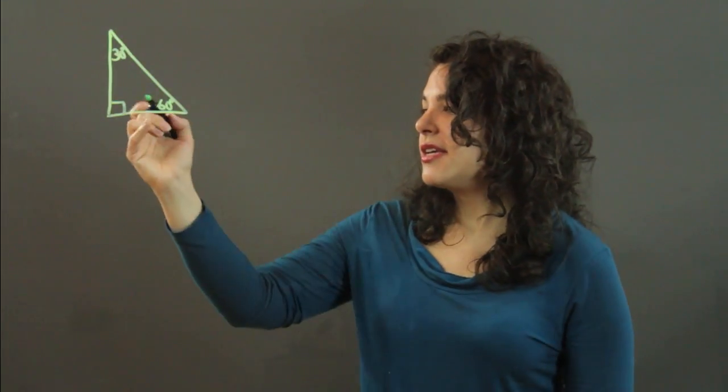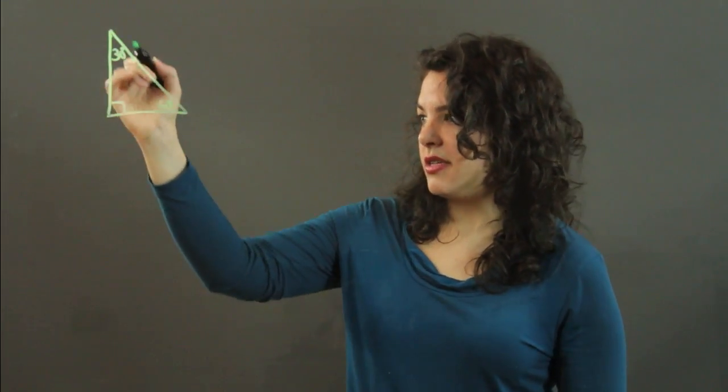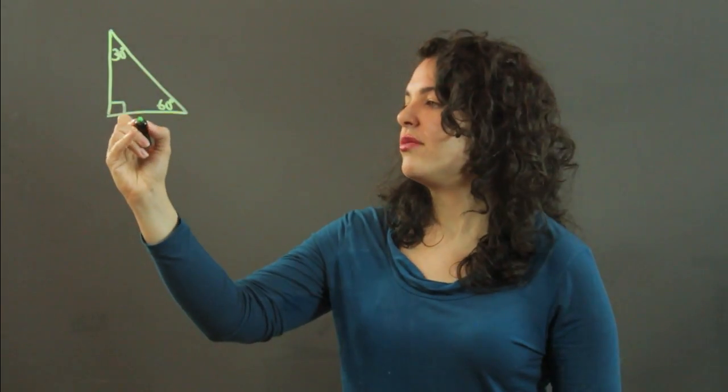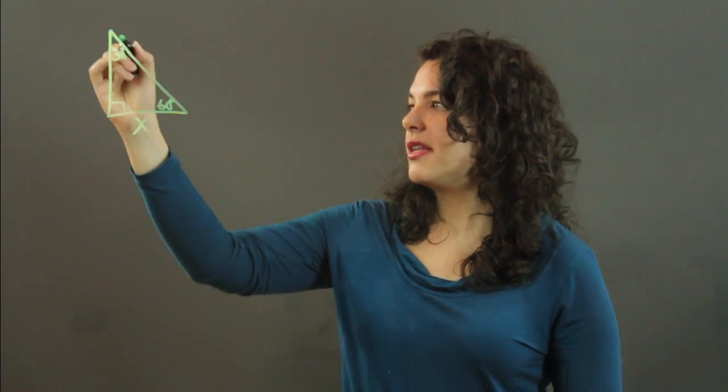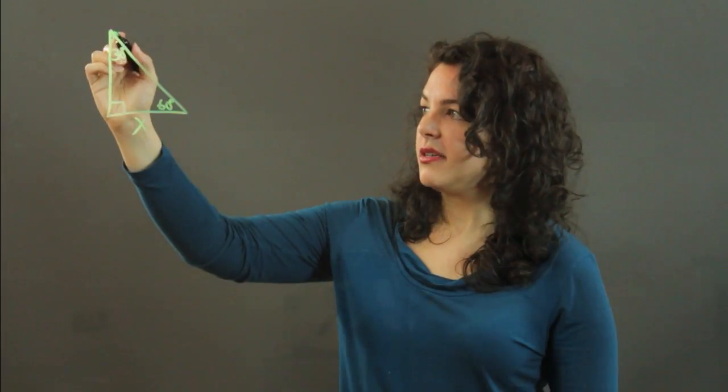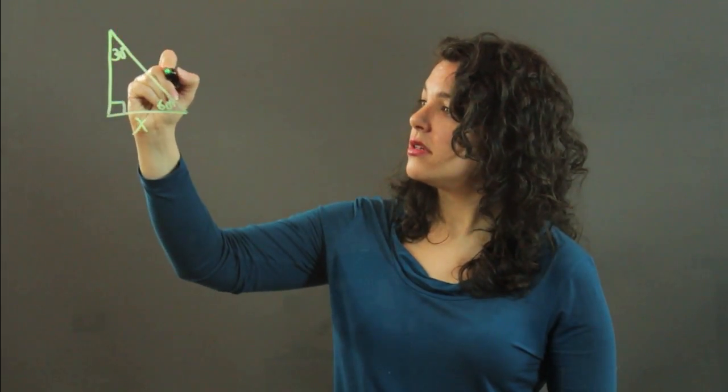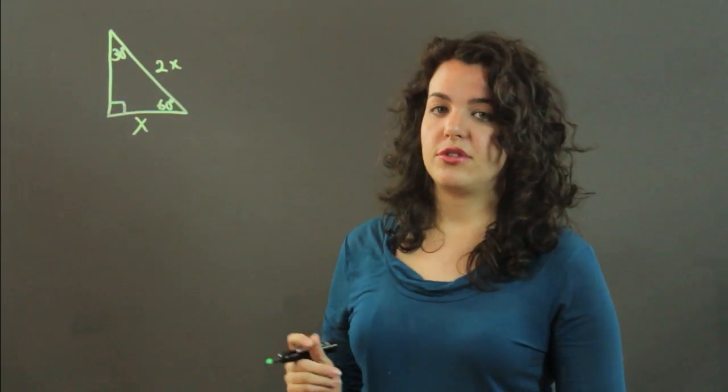Now, if we take the shortest side, the side opposite the 30 degree angle, and we call that x, then the hypotenuse of this triangle is twice that value, 2x.